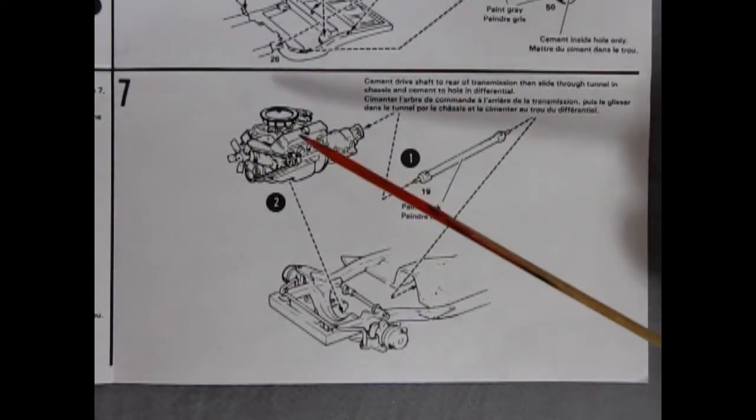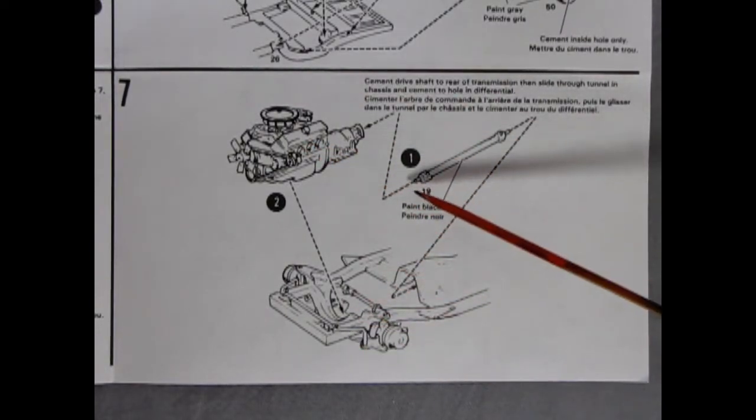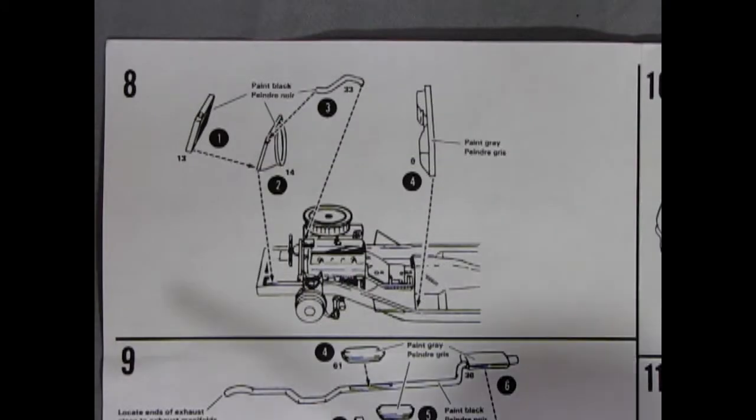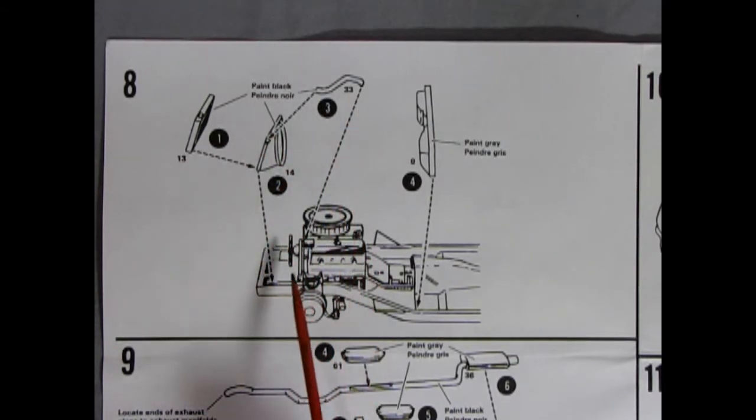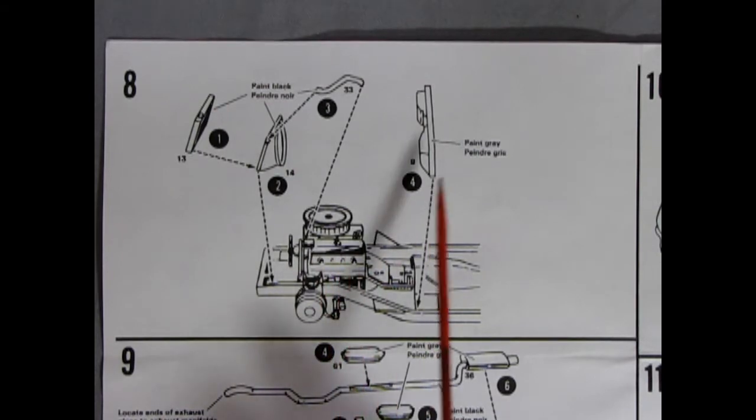Panel 7 shows our engine being installed onto the chassis with our drive shaft going back into our rear differential. Panel 8 shows our radiator and our fan shroud being glued in place on the chassis. You do get an upper radiator hose which drops in on the engine block and here's our firewall being glued into place.